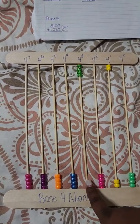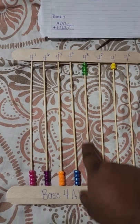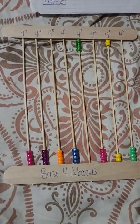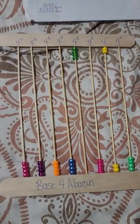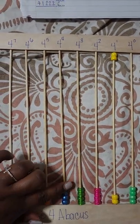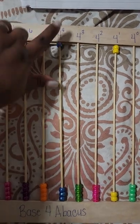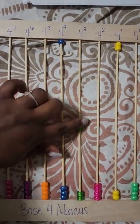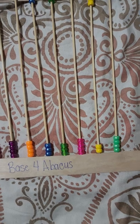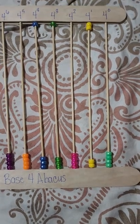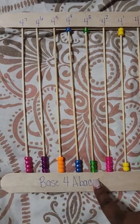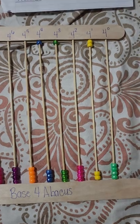We notice that all four beads for our thousands are now in the column, so we go ahead and regroup and add one to the next place. Our final answer is eleven thousand and ten in base-four — that is eleven thousand and ten base-four.